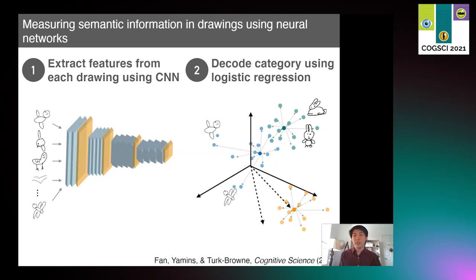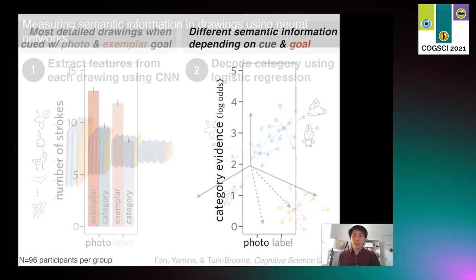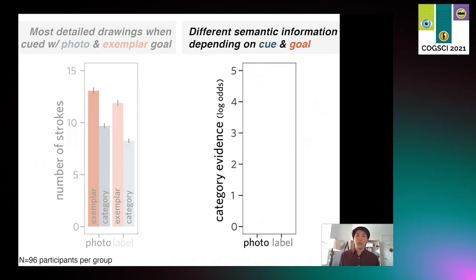To estimate this, we used our feature vectors to fit a 32-way logistic regression-based classifier, trained via a five-fold cross-validation to return a probability value representing how much evidence there was for the target concept, as opposed to the remaining 31 concepts. Using these probability values, we computed a log-odds ratio, which is what appears in the y-axis in the right-hand plot. So one reasonable prediction to have is that the highest category evidence might be found for the photo-cued drawings of exemplars, since these are richer in information overall and they are the most detailed of all the conditions.